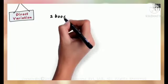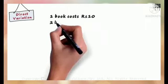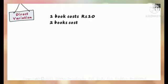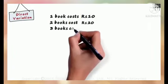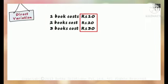One book costs 10 rupees. So how much will two books cost? Two books will cost 2 multiplied by 10, that is 20 rupees. Similarly, three books will cost 3 multiplied by 10, that is 30 rupees. You can see that as the number of books increases, the total cost also increases by the same factor.